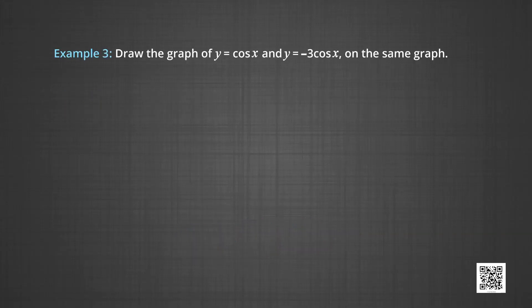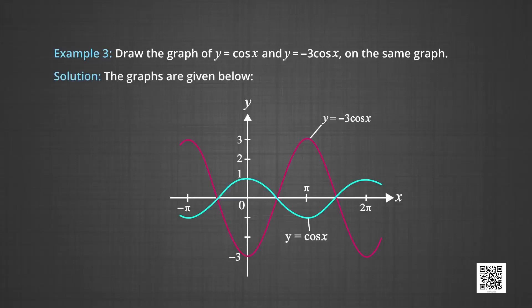In example 3, we will draw the graph of y = cos x and y = minus 3 cos x on the same graph. The pink line represents the graph of y = minus 3 cos x, and the blue line represents the graph of y = cos x. Comparing the two, the pink graph has been stretched vertically and reflected.